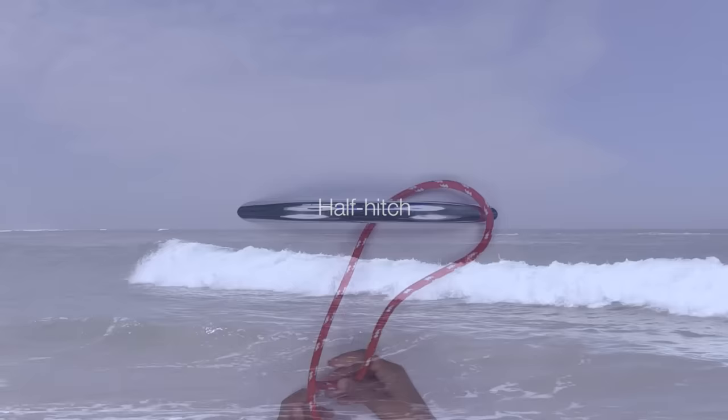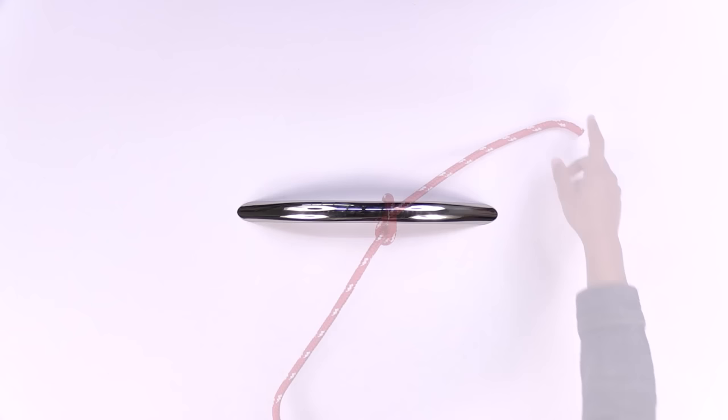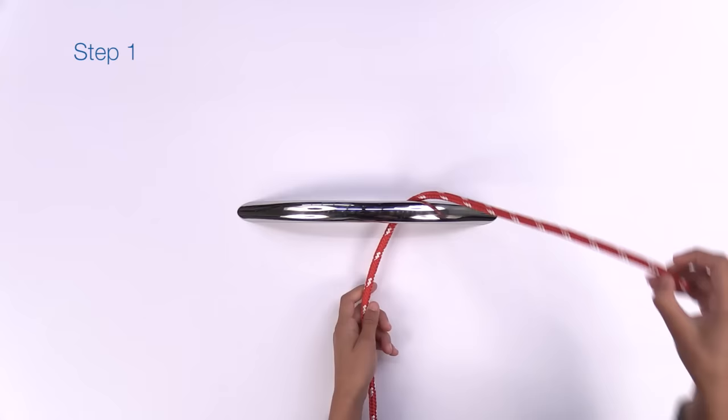Now let's try the half hitch. You use a half hitch to tie ropes to post or railings like what you see here. There are two steps to tying a half hitch.